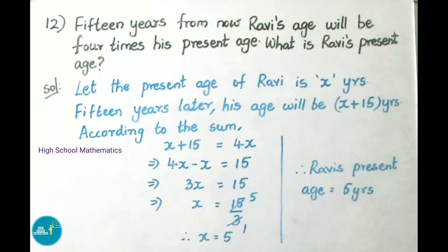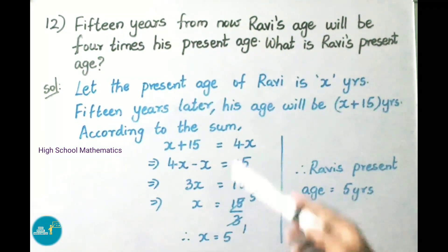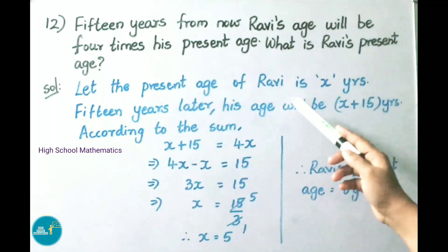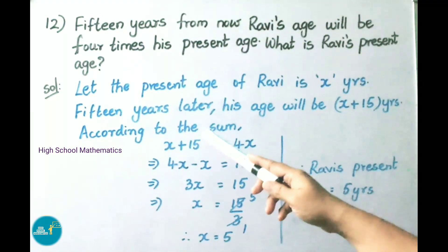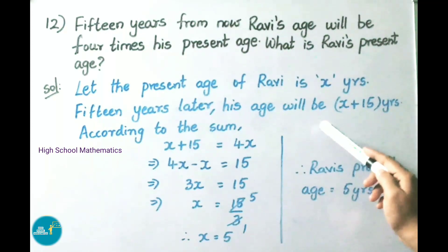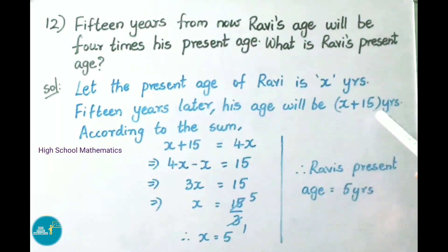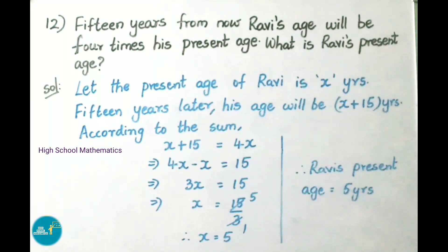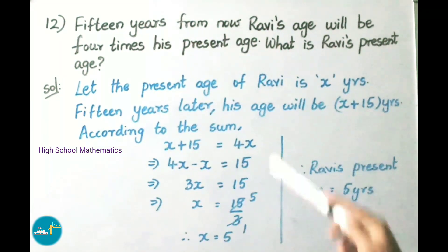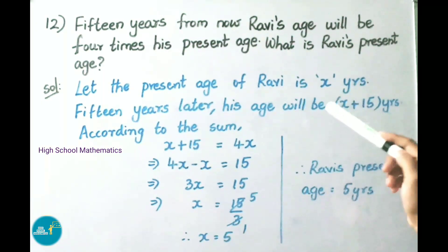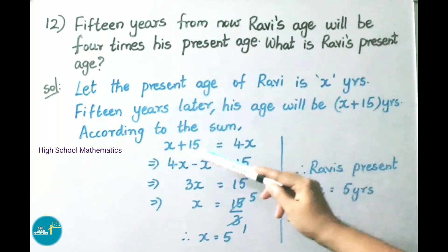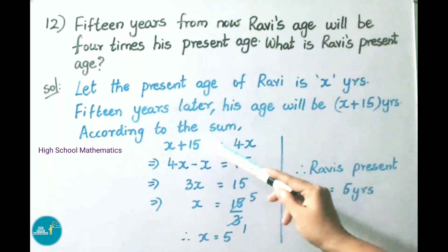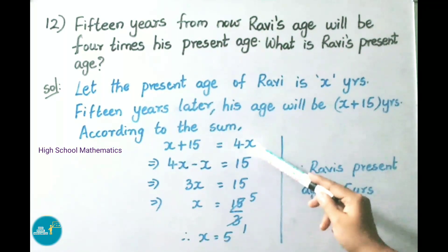Let us see the solution. Let the present age of Ravi be x years. 15 years later, his age will be x plus 15 years. According to the sum, 15 years later his age will be equal to 4 times his present age. So x plus 15 equals 4x.